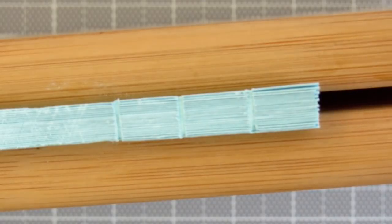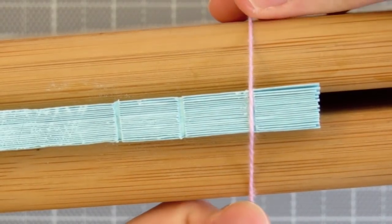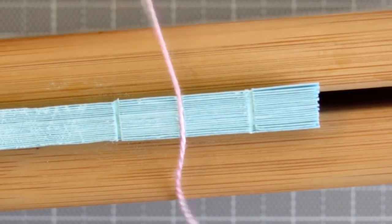As an additional option for more support, you can glue thread to these grooves and cut the excess off after the glue is dry.